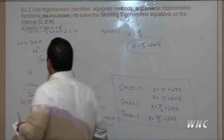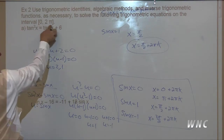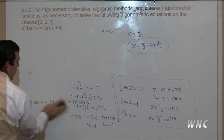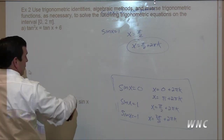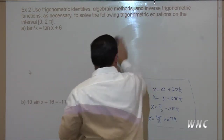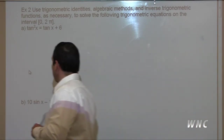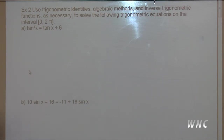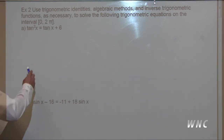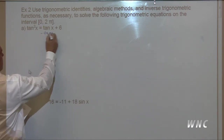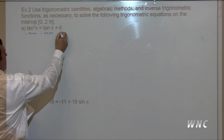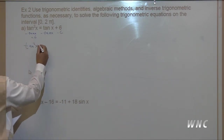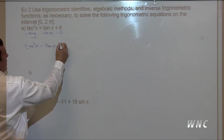Moving on to example two. The nice thing about this one is it gives us a domain from zero to two pi, so we don't have to worry about the two pi k. Use trigonometric identities, algebraic methods, and inverse trigonometric functions as necessary to solve on the interval from zero to two pi. We have tangent squared x equals tangent x plus six. Moving everything to one side: tangent squared x minus tangent x minus six equals zero.